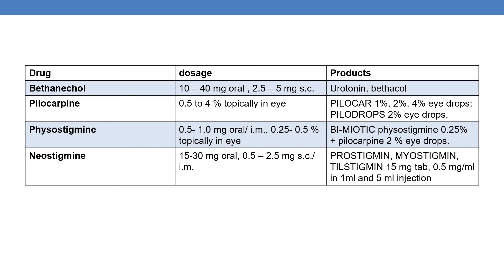Now let us discuss some of the drugs and their marketed products including the dosage. First one is bethanechol. It is available in the dosage of 10 to 40 mg oral or 2.5 to 5 mg subcutaneous. Examples of marketed products are Urecholine and Betacol.